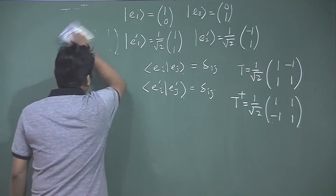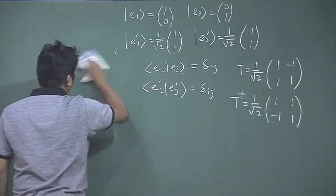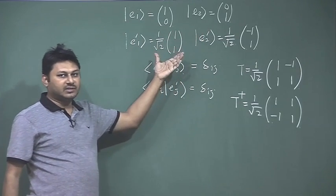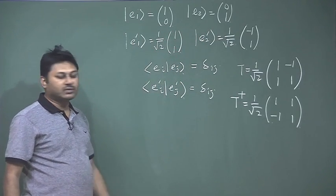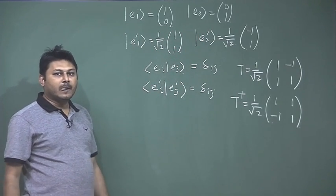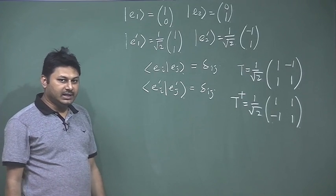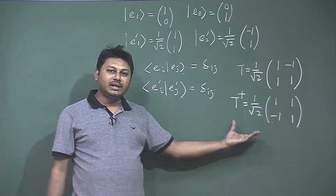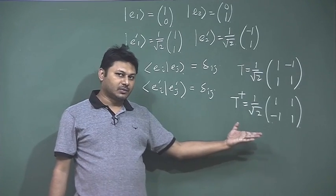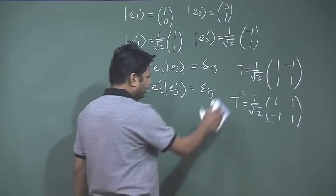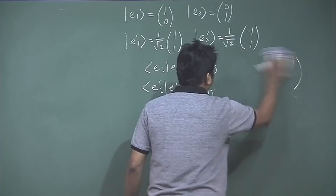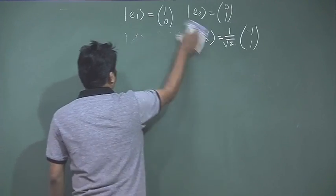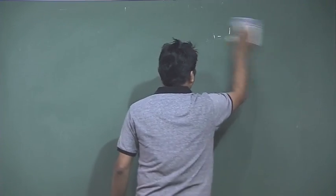So we just cross-verified that this is true. Whenever you transfer one set of basis to another set of basis with some transformation, if the transformation matrix is known you can readily verify with this condition whether they form a unitary transformation or not. If they do not form a unitary transformation, then you can ensure that the new set of basis may not be orthonormal.